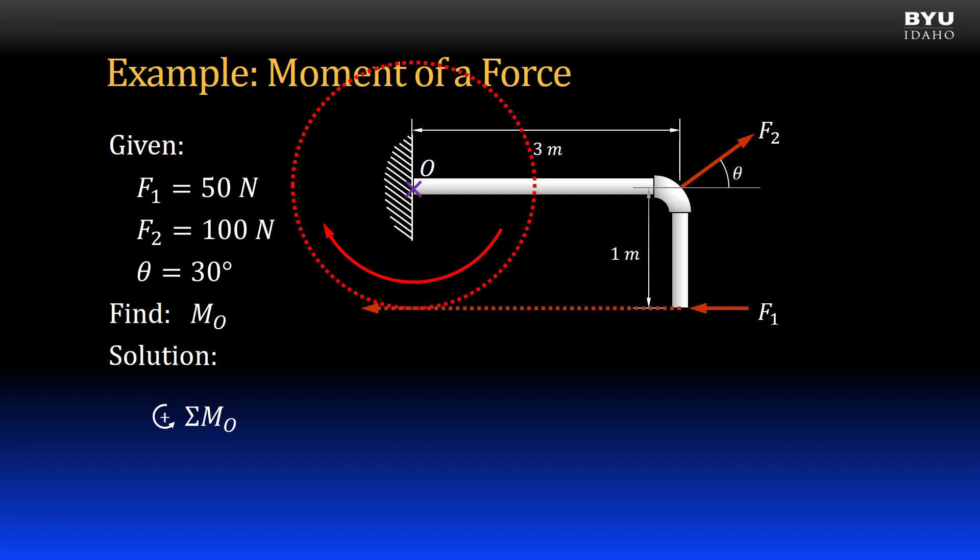Also, I see the sense of direction. It is causing a clockwise rotation at point O, so I will call it a negative moment, and write it like this. I put the force as negative 50 newtons, and the moment arm in the Y direction as 1 meter.